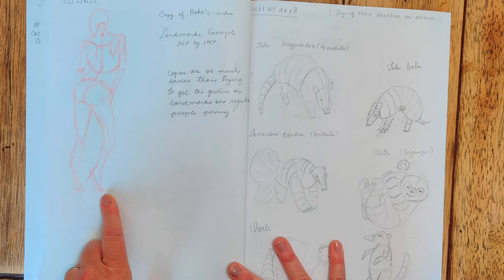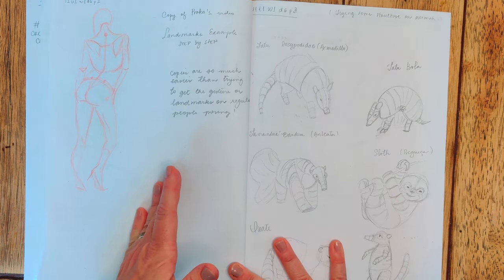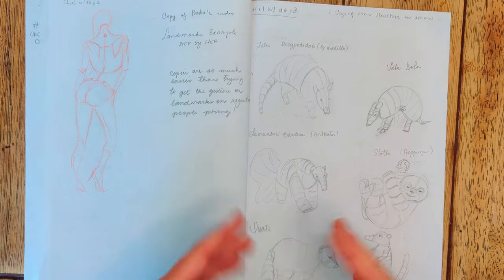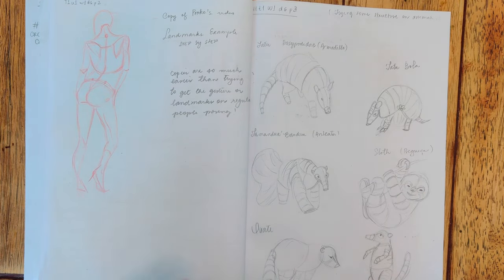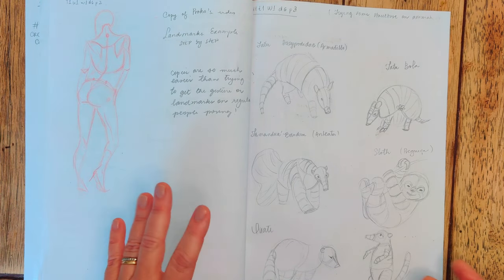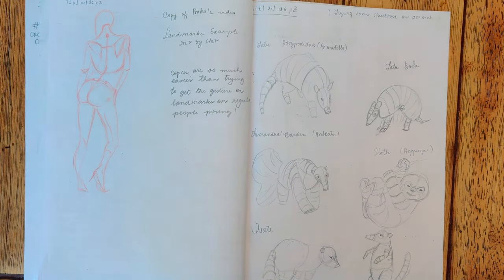Next, it was Proko's landmark video. And I copied his landmark drawing. And copying is always so much easier than getting the gesture in landmarks by myself in a timed practice. But it is satisfying to be gradually progressing through the phases of figure drawing.